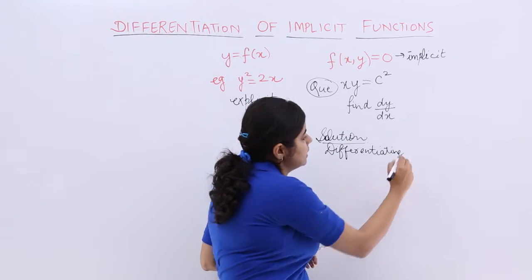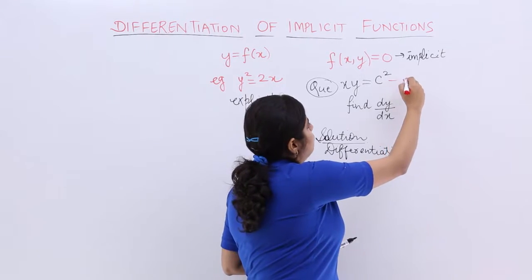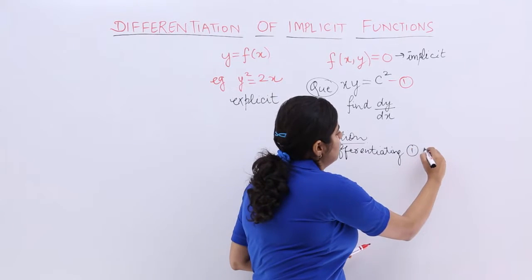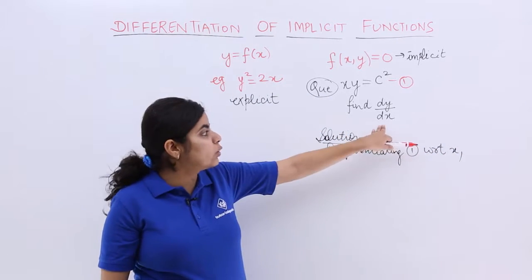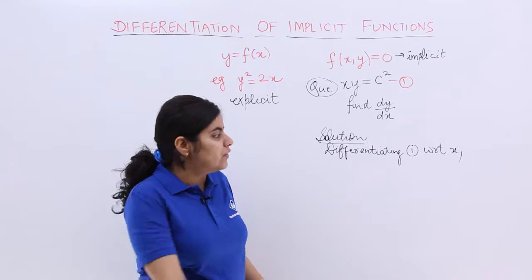Differentiating, let me take this question only as equation number 1, differentiating 1 with respect to x. Why with respect to x? Because the question expects me to find dy by dx, that's it.